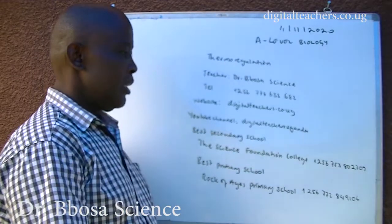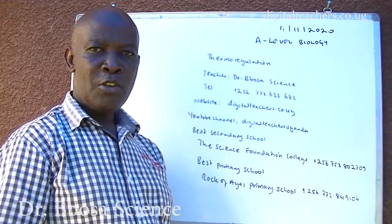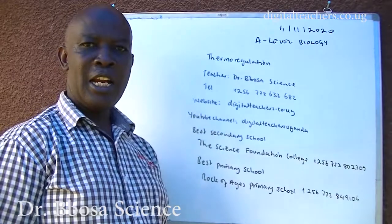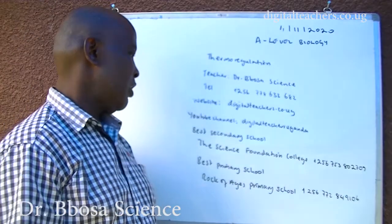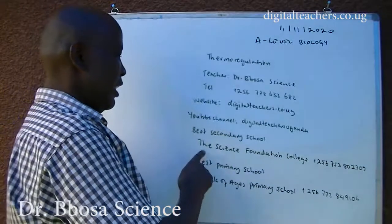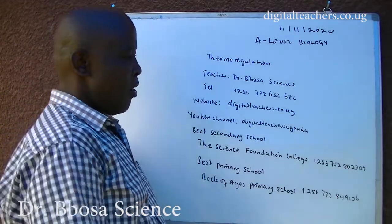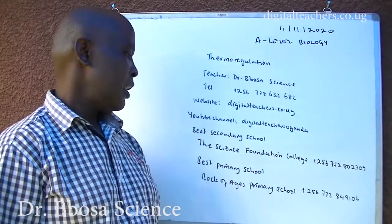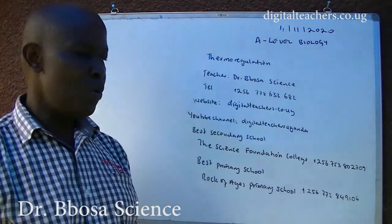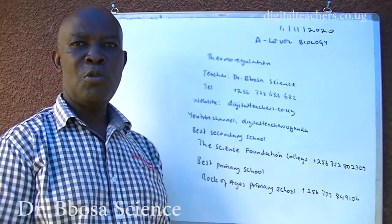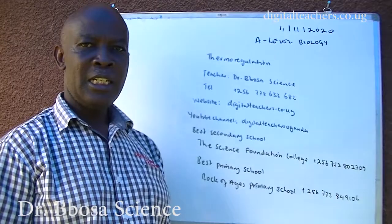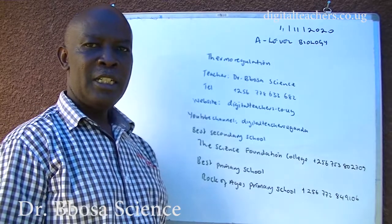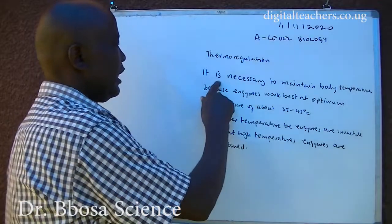YouTube channel: digitalteachers.uganda. Go to the YouTube website, search digitalteachers.uganda, and you will be given categories of videos. The best secondary school where I teach is Science Foundation College, Plus 256-753-80-2709. The best primary school is Rock of Ages Primary School, Plus 256-772-849106.